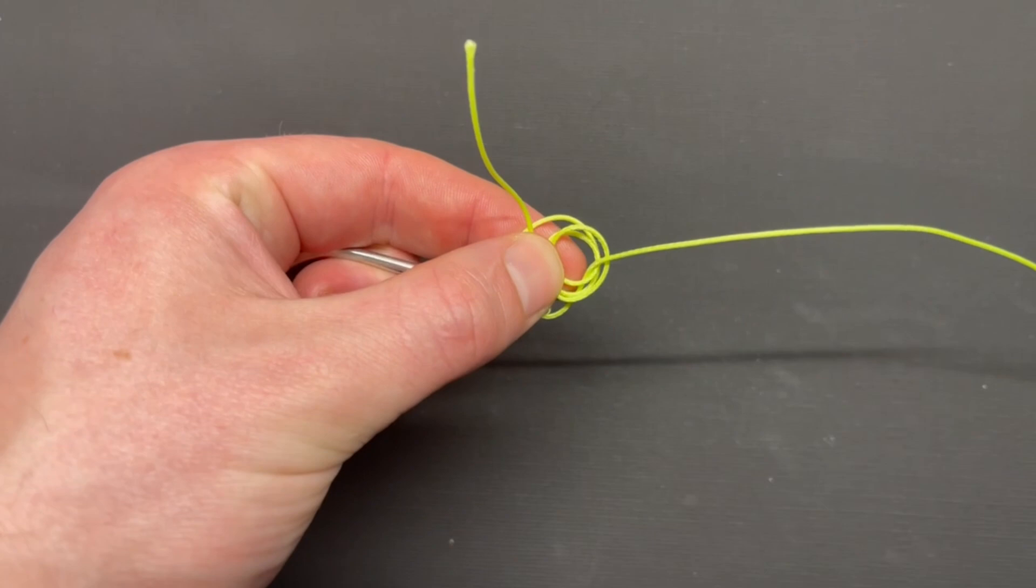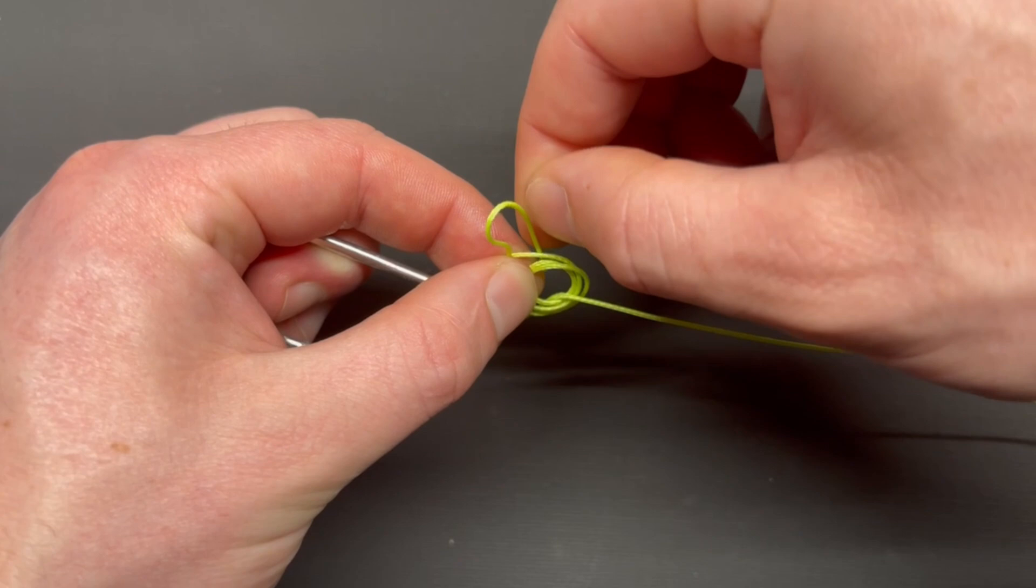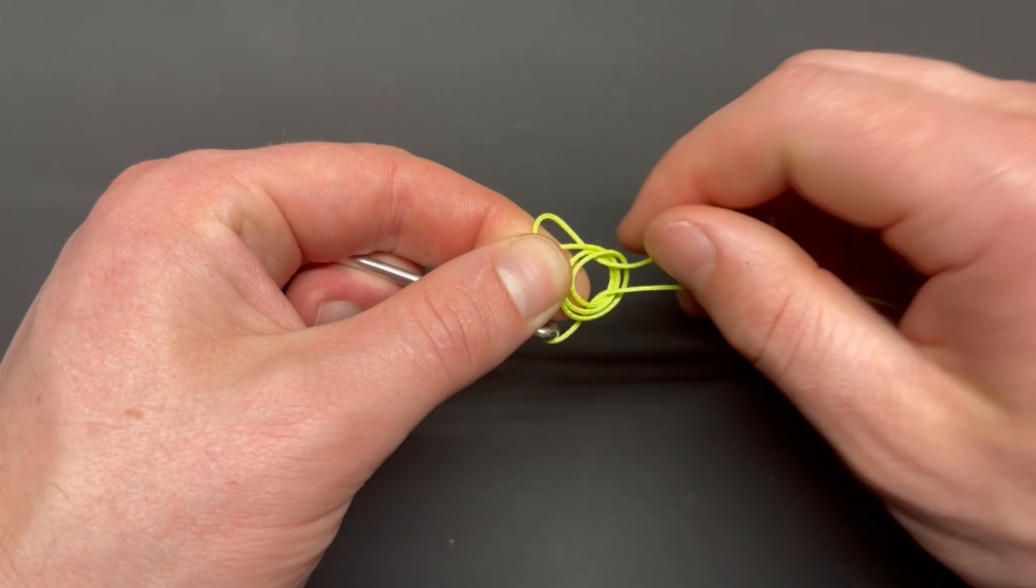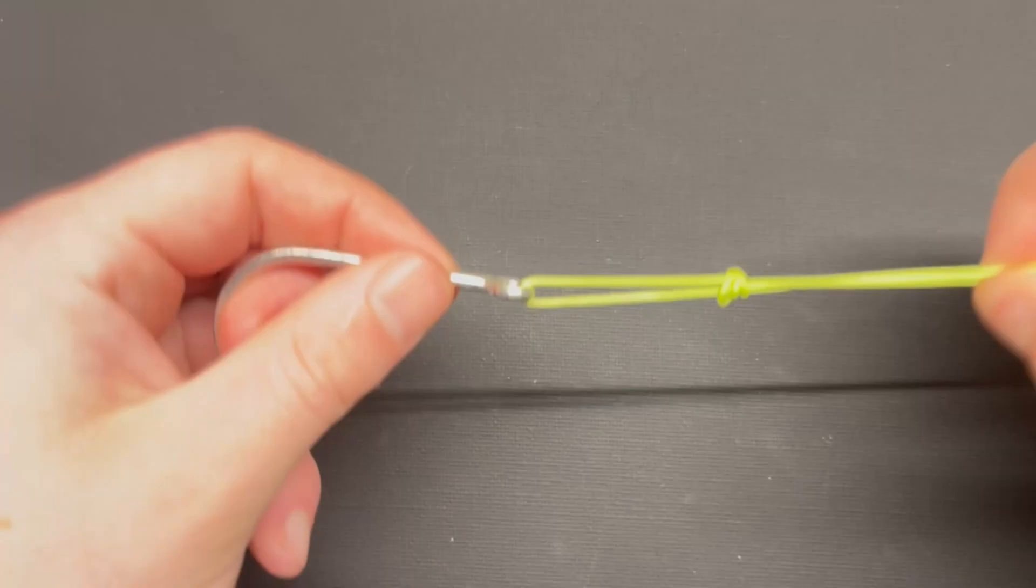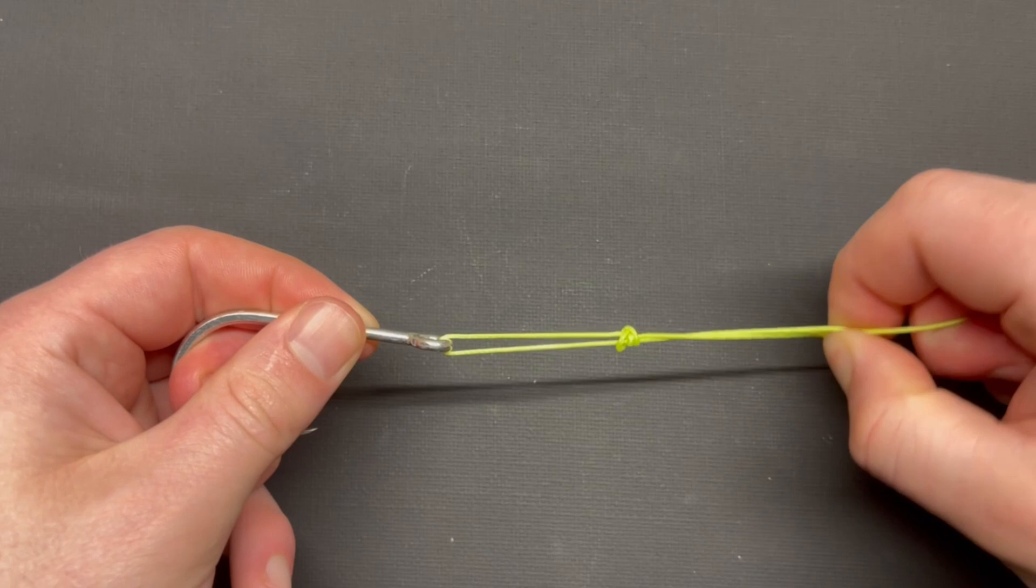So what you want to do, take your tag end, run it through all three loops together. All three loops, like so. Then all you want to do is take most of the slack out of this, wet the line, and then you can pull it all the way down to the hook and give it a pull and it'll all cinch down in place.